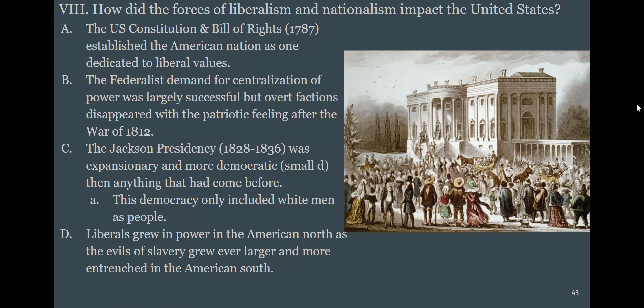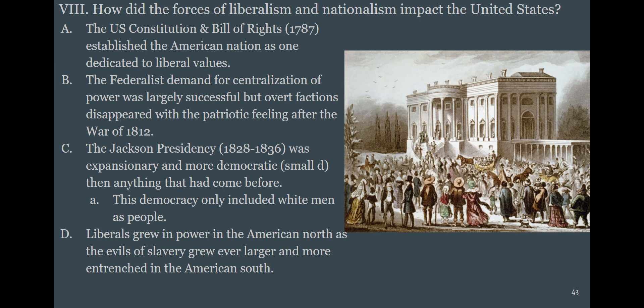The United States starts off as a liberal country — the Constitution and Bill of Rights are about liberal values, and that's what rights are. But it's less of a nationalistic nation than one of many smaller municipalities. There's a tension between federalists who want strong national government and anti-federalists, many of whom are slave owners afraid of slavery being abolished from the very beginning of the country.